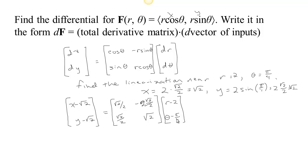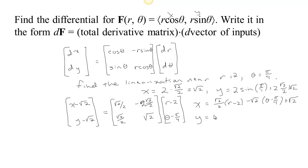Multiplying that out, we get a linear function for x and a linear function for y. The function for x is root 2 over 2 times (r minus 2) minus root 2 times (theta minus pi over 4), and moving the root 2 over gives x equals root 2 plus root 2 over 2 times (r minus 2) minus root 2 times (theta minus pi over 4). This is a linear function for x in terms of r and theta — just the best linear function to approximate x near that point. Similarly for y, we get root 2 over 2 times (r minus 2) plus root 2 times (theta minus pi over 4), and moving the root 2 over gives us the best linear approximation. This is the tangent space.